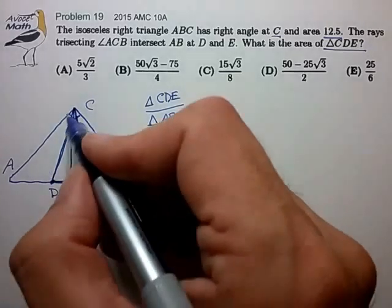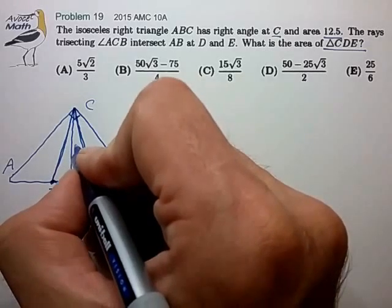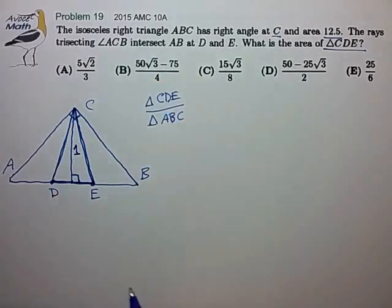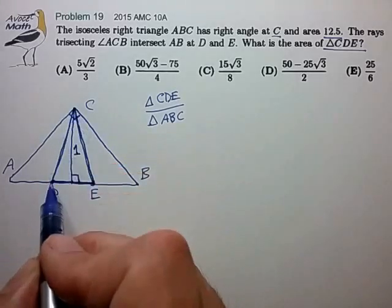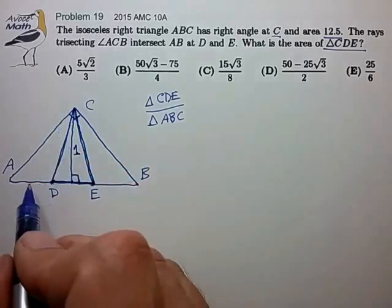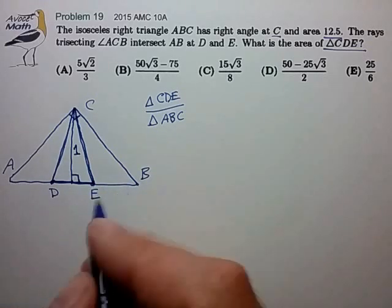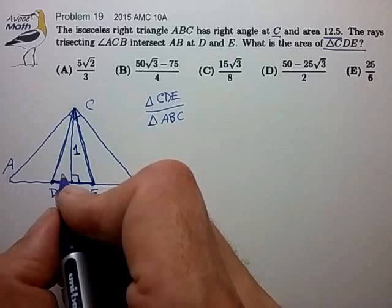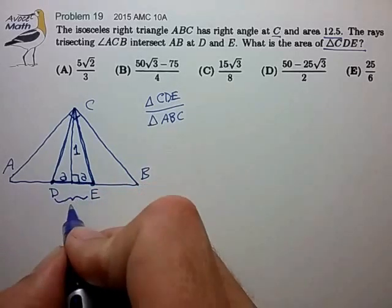So what exactly is the ratio of these two triangles? These two triangles share the same altitude, so that's helpful. Let's call that altitude just 1 for convenience. So it looks like the ratio of triangle CDE area to ABC is really just the same as the ratio of the base lengths. So let's call the base length of CDE 2A.